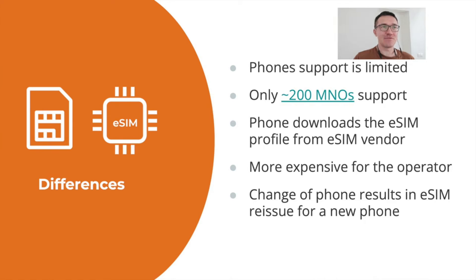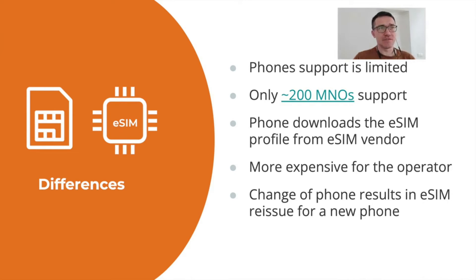As for the eSIM, eSIMs are provisioned over the air. So an eSIM microchip actually gets its crypto keys from the provider through the internet. Of course there is security, encryption and so on, but this is the major difference — for eSIMs, the slots holding crypto keys are programmable. Another difference is the cost of the technology. eSIMs nowadays are more expensive, so the technology is not yet widespread, which is why only a limited number of operators support eSIM at the moment.